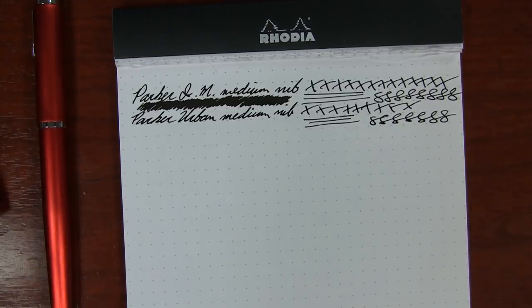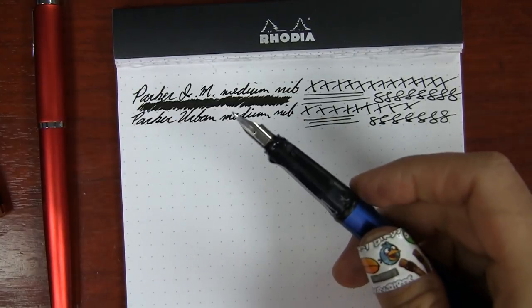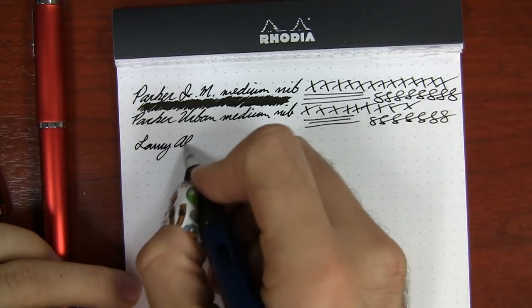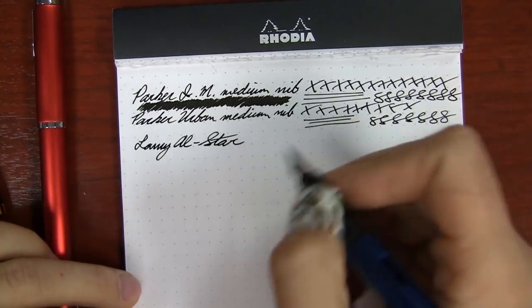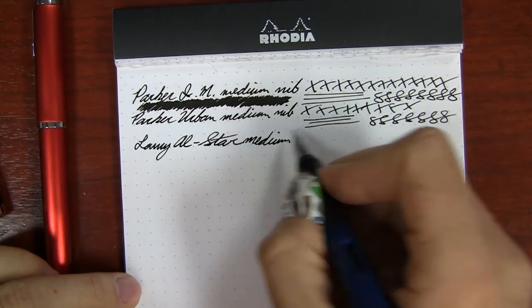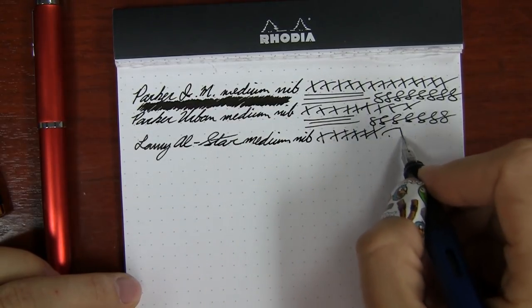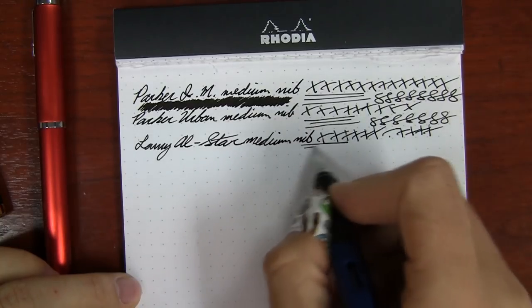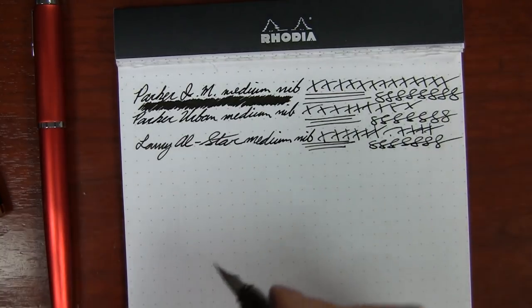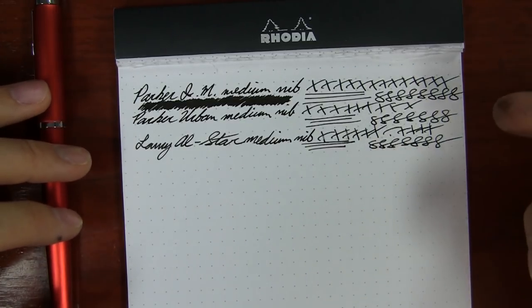And then the last one I wanted to compare it to was I have a Lamy All Star. So I got a Lamy with a medium steel nib here. Lamy All Star. The Lamy definitely, I don't know how much you can hear, but I can definitely hear more the resistance as well as feel it. Not that I got anything against Lamy, because I'm a big Lamy fan. But there is a little bit more resistance to this nib than there is to this Parker one. Voila. So it's going to be pretty darn similar. I'm not seeing a major difference in the way that the Lamy is writing compared to the IM.